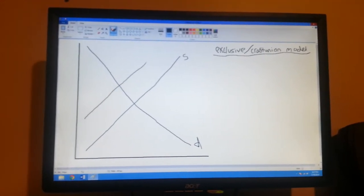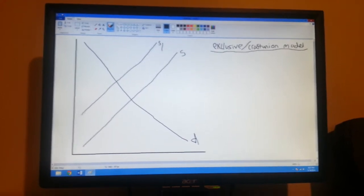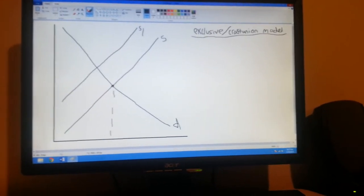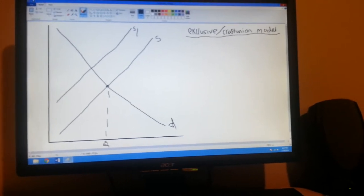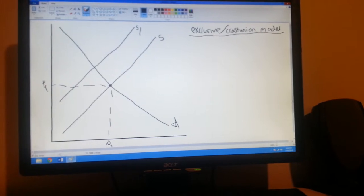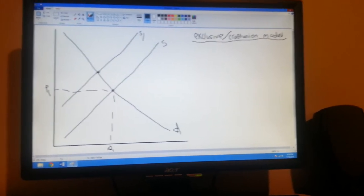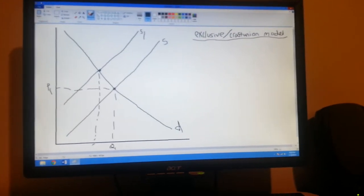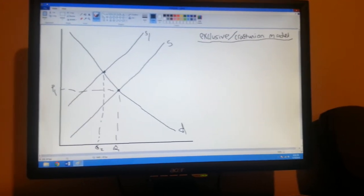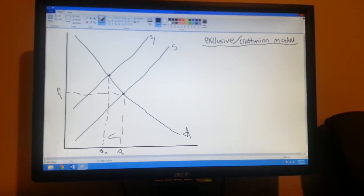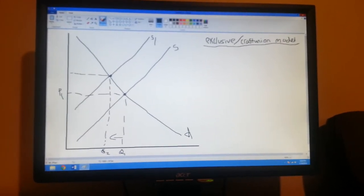This will be your new supply curve. As you can see, in the beginning we were producing right here. So this was our quantity 1 and price 1. As you see now with the new supply curve, the quantity in the market has gone down and the price has gone up.